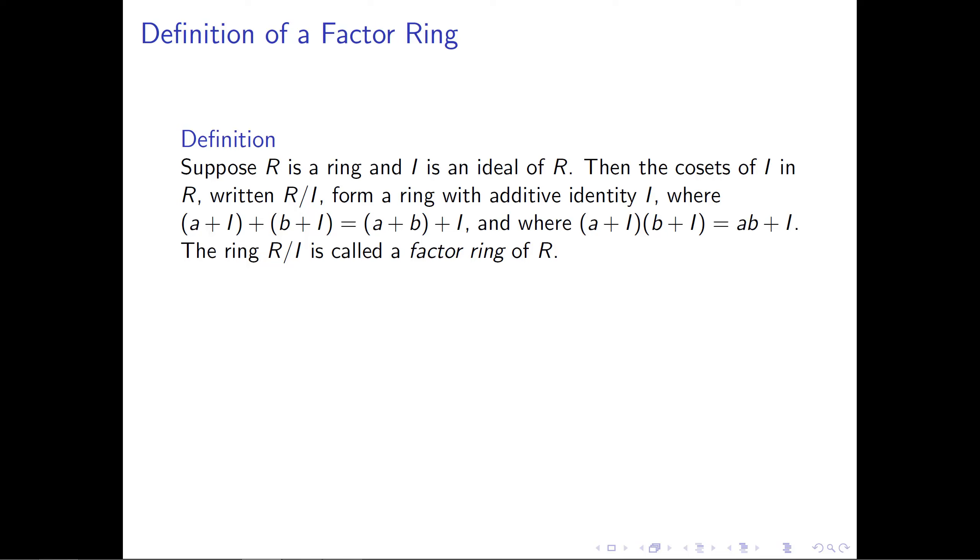The thing that's new here is we need to figure out how we're going to add a multiplication structure into R mod I. So when we take the cosets (a + I) and (b + I) and multiply them together, what we're going to define that to be is the product of the elements a and b plus I. Because we've taken the group R mod I, we knew it was an additive group, and we've defined this multiplication structure on it. This is now called a factor ring of R instead of just a factor group of R.